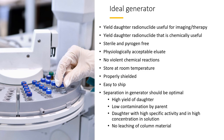The ideal generator should yield a useful daughter radionuclide and the chemistry should be useful. For example, rubidium-82 from a generator is not really an isotope we can do a lot with chemistry-wise, although it has its uses for myocardial perfusion. A generator should be physiologically acceptable, easy to store, safe to use, easy to ship, give a high yield of the daughter, have low contamination of the parent isotope, give high specific activity of the daughter radionuclide, and not lead to any leaching of the column material.